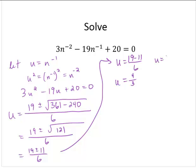u would equal 19 plus 11 over 6. That's 30 over 6. So that is 5.